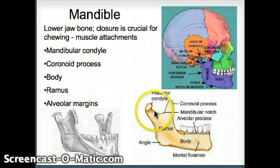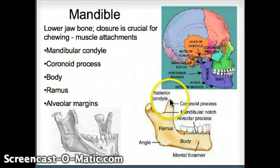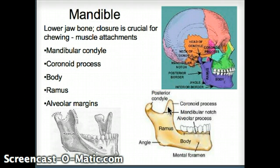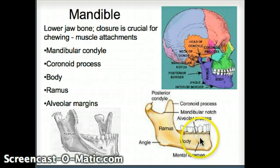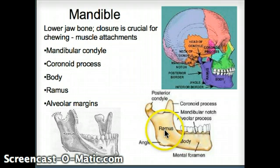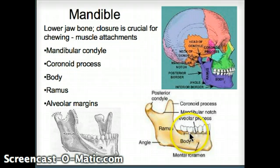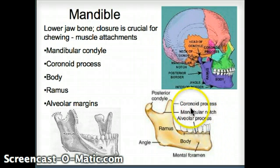The mandibular condyle is here. We also have a coronoid process that sticks out anteriorly, and that is a muscle attachment for the temporalis muscle, which pulls on the mandible as it closes the mouth. Looking at the mandible from the front, we have the body that reaches around anteriorly. The ramus is the flatter portion that goes up into the condyles. We also have alveolar margins — the tooth sockets — sometimes also called the alveolar process.